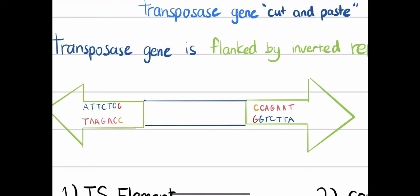Looking at a transposon's structure, we can see the inverted repeat sequences. For example, at one end we have bases G, A, T, T, C, T, G, G — and at the other end it's inverted: G, T, C, T, T, A. The complementary strand shows the same pattern in reverse. So the same sequence appears inverted on both ends, flanking the transposon.